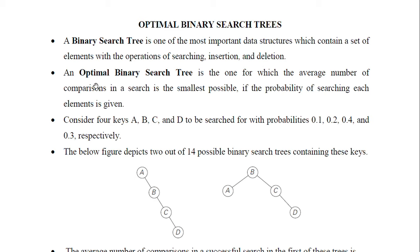An optimal binary search tree is the one in which we find an optimal tree having the lowest number of comparisons. For example, if we take four keys A, B, C and D with searching probabilities of 0.1, 0.2, 0.4 and 0.3 respectively, we can construct many trees with these four keys. These are two sample trees.